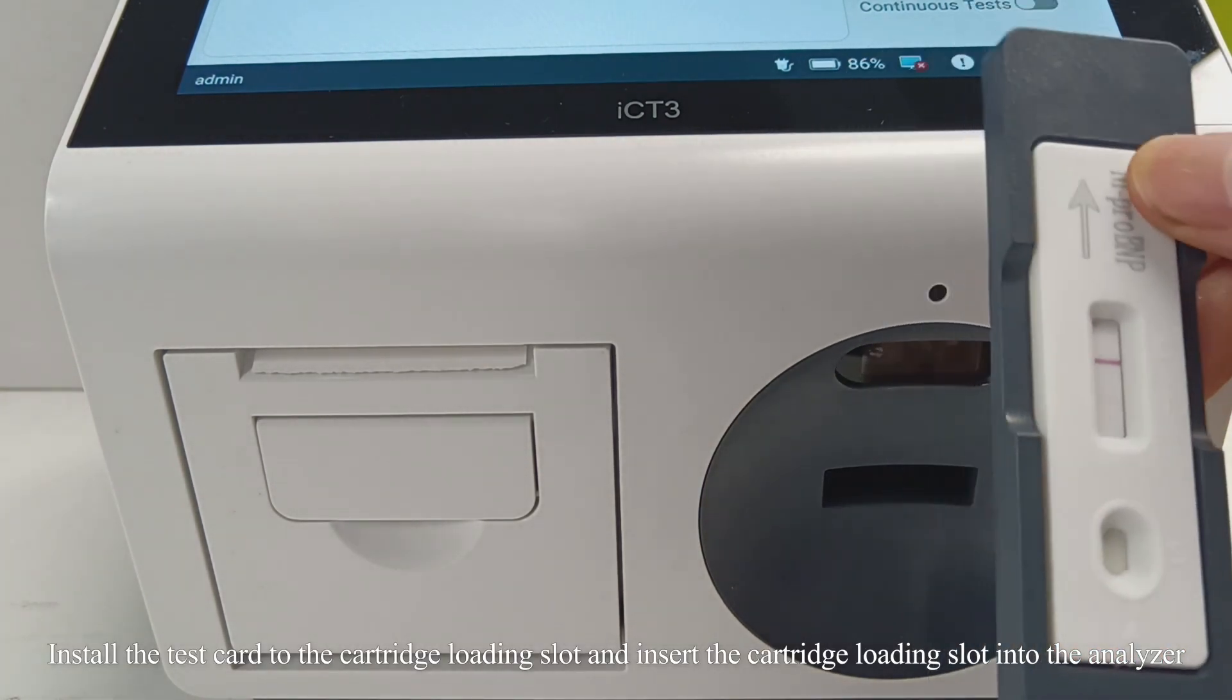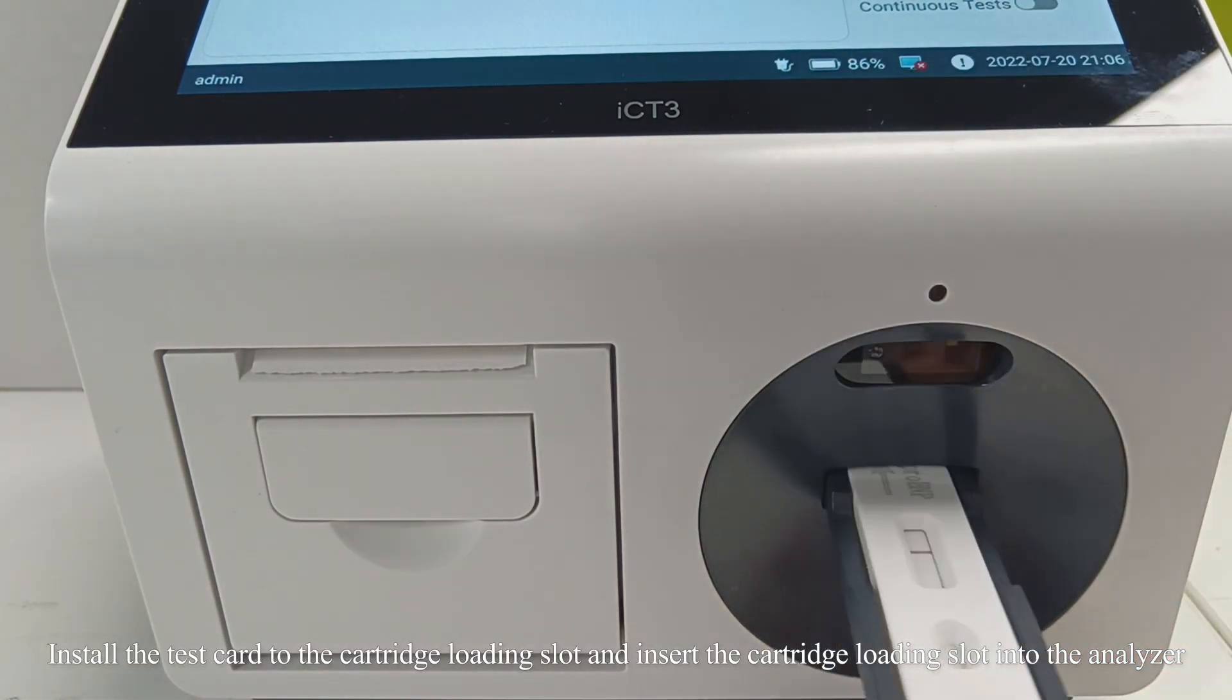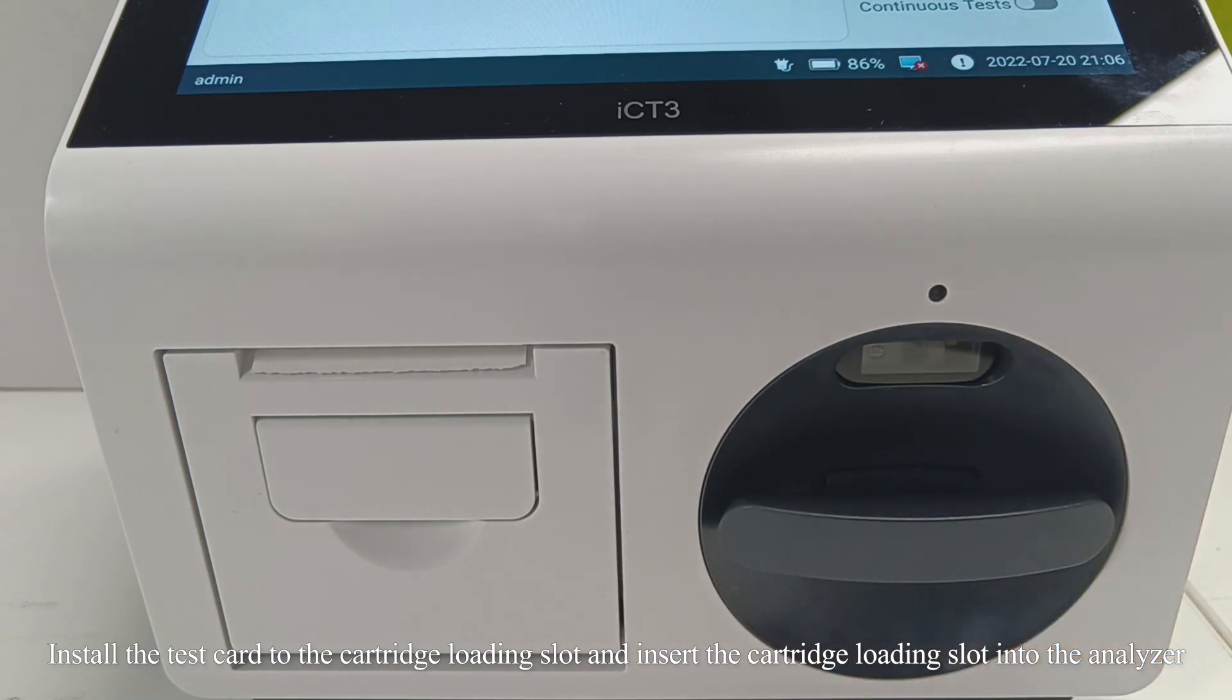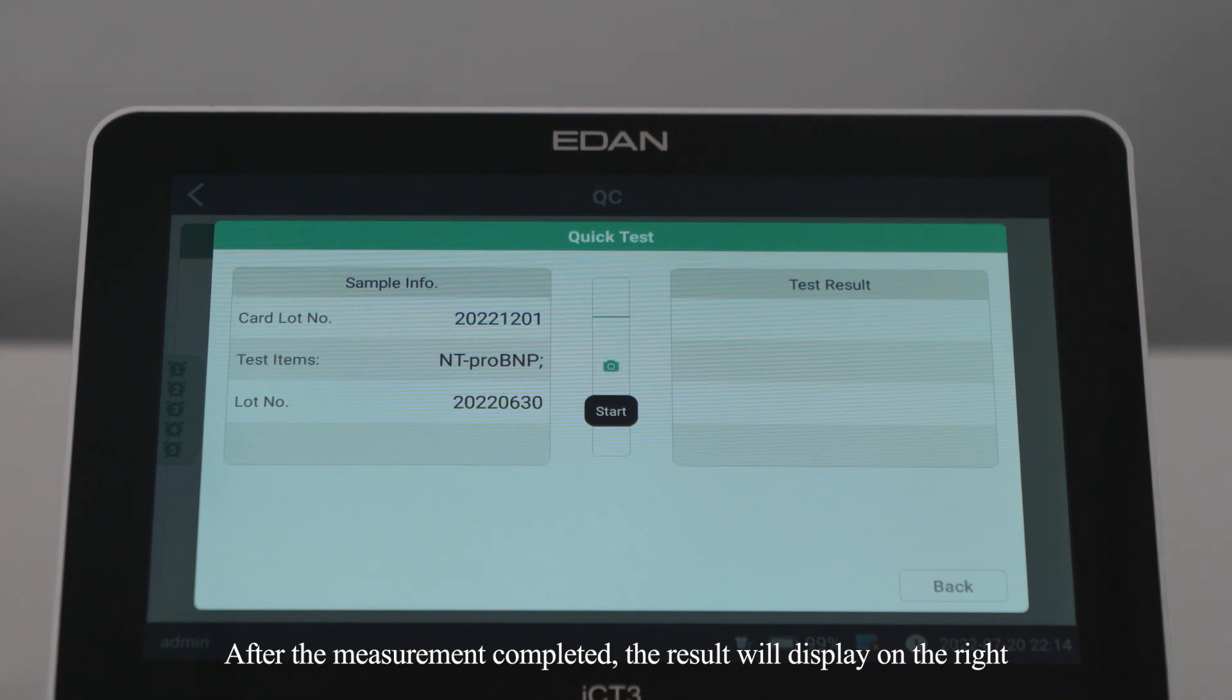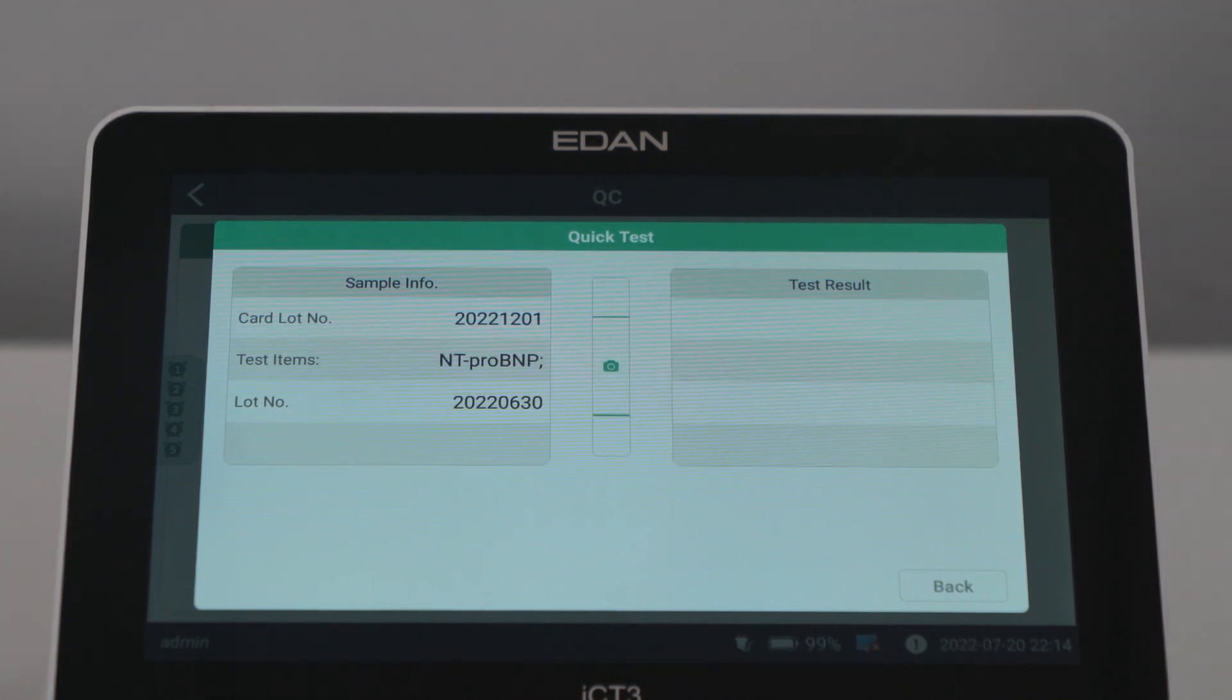Install the test card to the cartridge loading slot and insert the cartridge loading slot into the analyzer. Press quick test button. After the measurement completed, the result will display on the right.